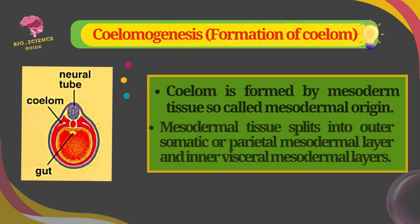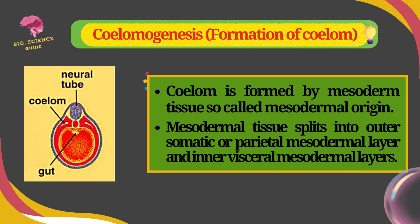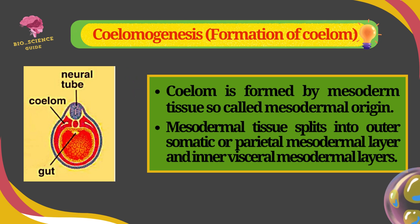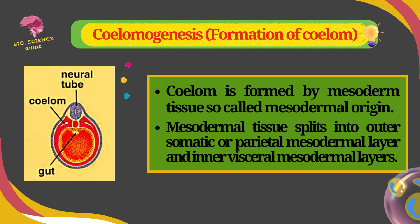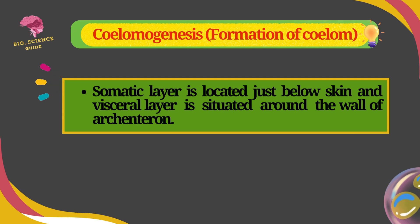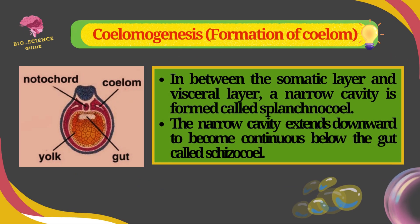The process of Coelomoogenesis or formation of Coelom occurs in the following ways. The Coelom is formed by mesodermal tissue, so it is of mesodermal origin. The mesodermal tissue splits into an outer somatic or parietal mesodermal layer and inner visceral mesodermal layers. In between the somatic layer and visceral layer, a narrow cavity is formed called the splanchnocoil.